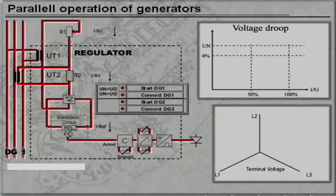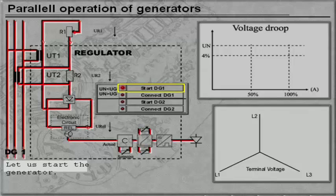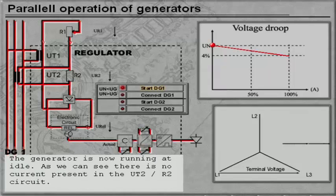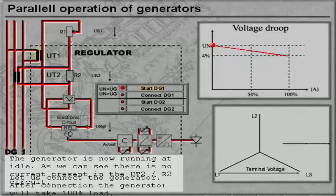Let us start the generator. The generator is now running at idle. As we can see, there is no current present in the UT2R2 circuit. Let us connect the generator.